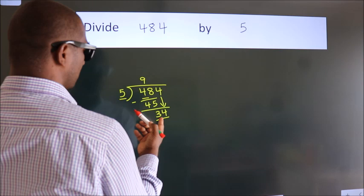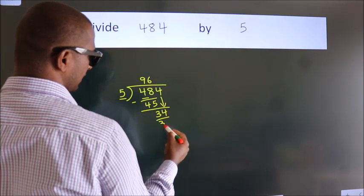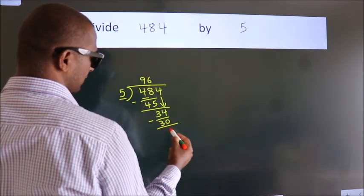A number close to 34 in the 5 table is 5 times 6, which is 30. Now we subtract and get 4.